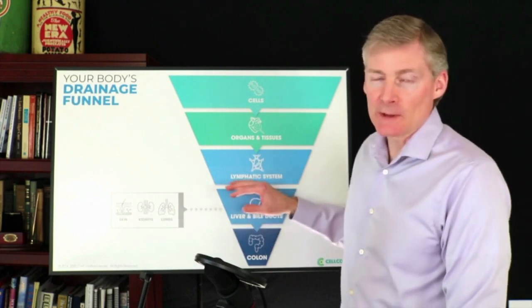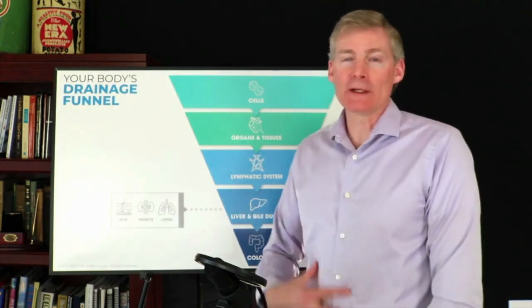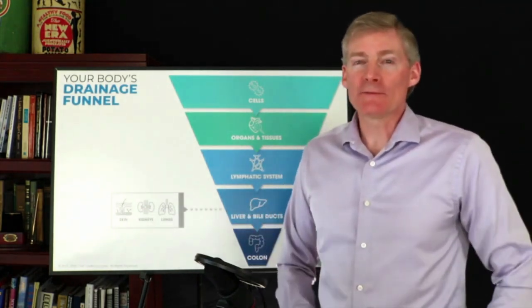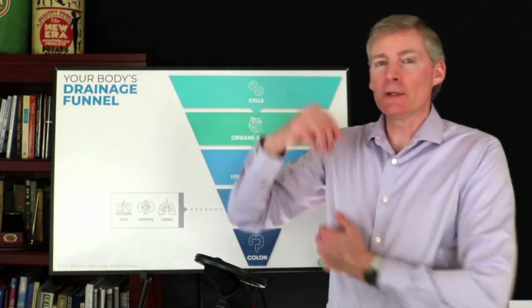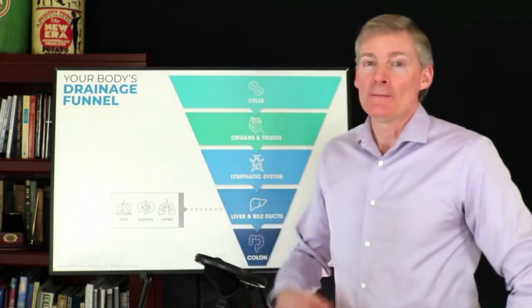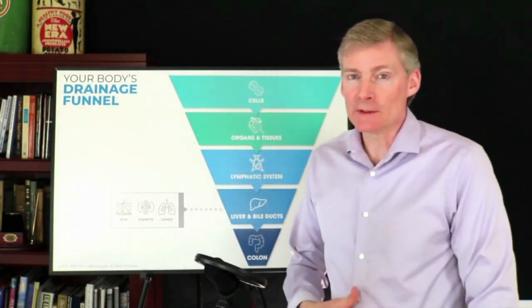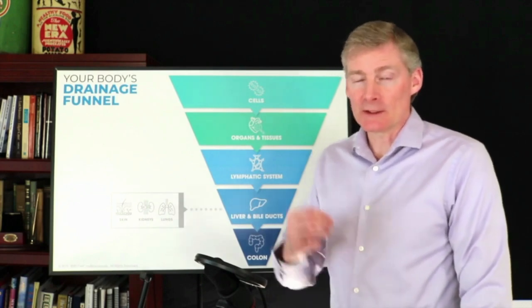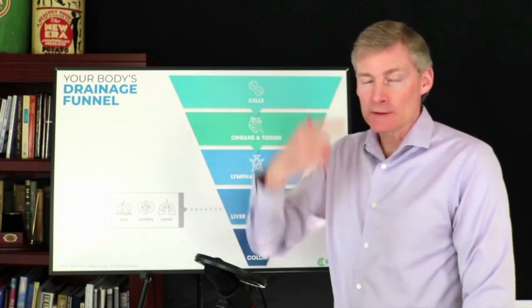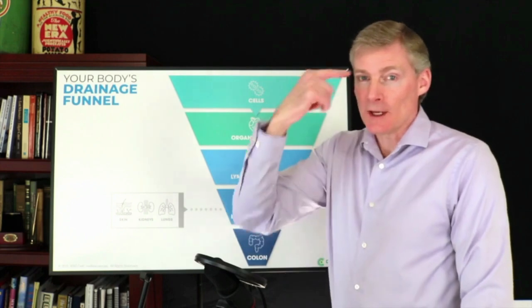Next we have the lymphatic system. Half of the lymphatic system is right in the gut and there's a lot of lymph nodes and vessels here under the armpits in the inner thigh. Recently in the last few years there's even a lymphatic duct that goes from the brain down to the gut directly. So there's a direct connection gut-brain.